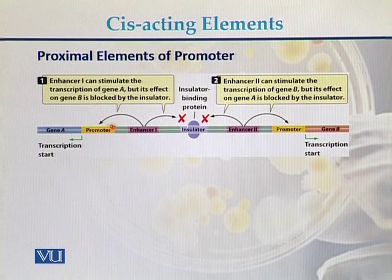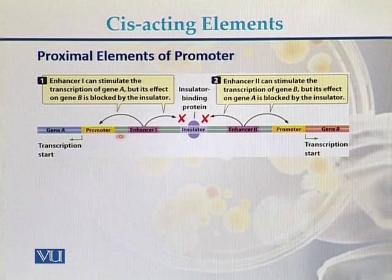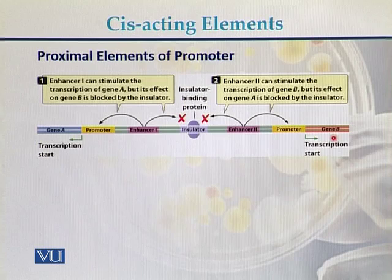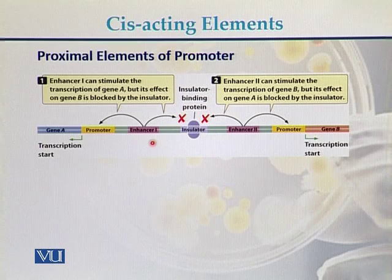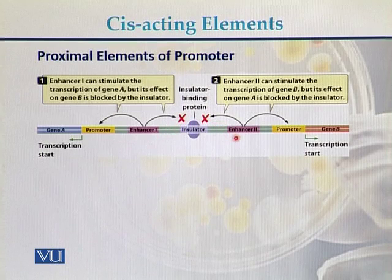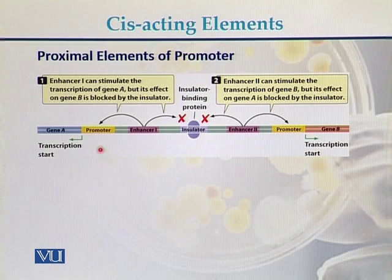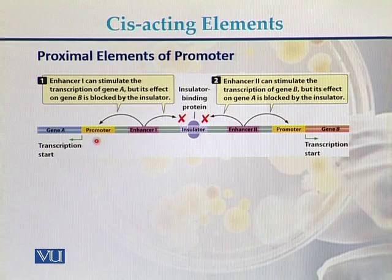Enhancer one can stimulate the transcription of gene A. Similarly, enhancer two stimulates the transcription of gene B. However, because there is an insulator between enhancer one and enhancer two, enhancer one has no effect on the gene expression of gene B, and the enhancers of gene B do not affect the expression of gene A.